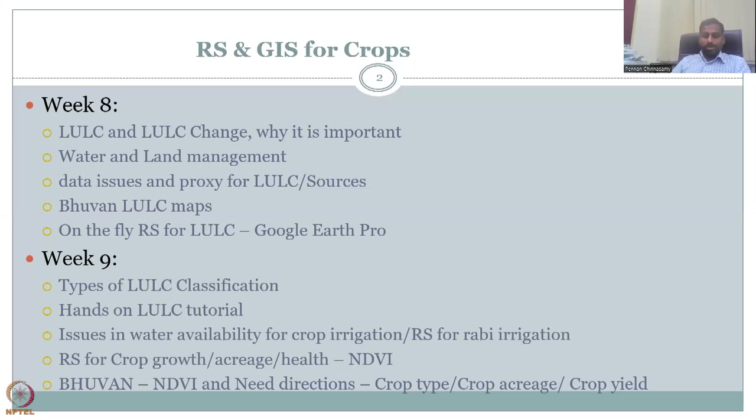So on that note, we will look at some issues and availability of data and then how remote sensing can help, remote sensing for crop growth, acreage, health, and some indicator like NDVI we will use. We'll look at Google NDVI and then we'll also look at the new need directions, future research directions that are needed to identify crop type, crop acreage and crop yield.